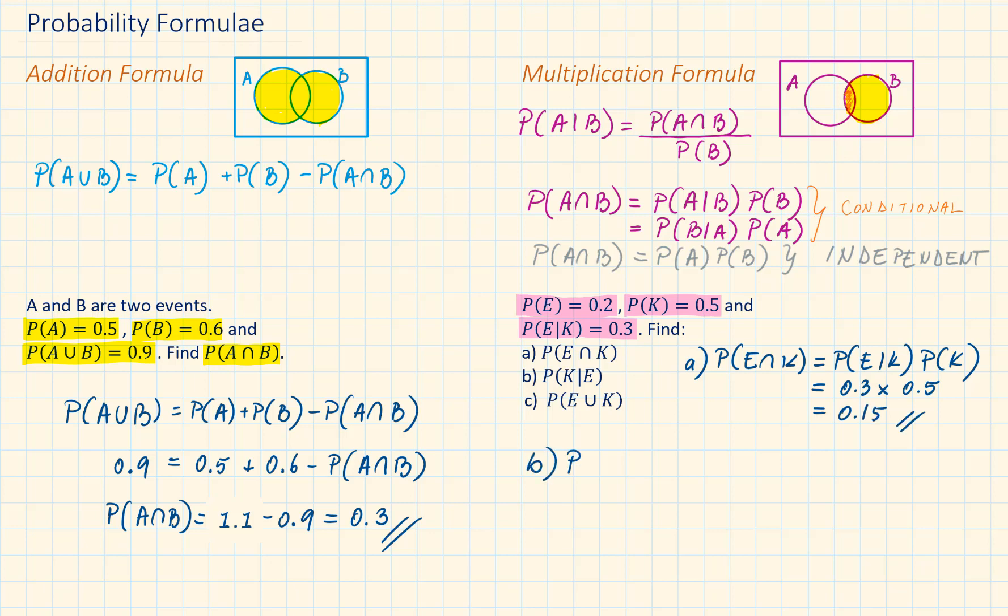Probability of K given that E has happened. This is equal to probability of K intersection E divided by probability of E. Substituting the values, we will have our answer, which is 0.75.